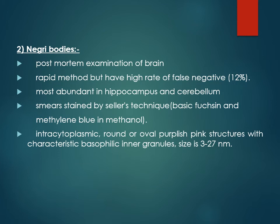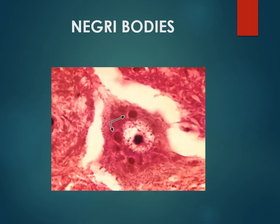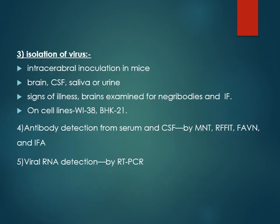Negri bodies are intracytoplasmic eosinophilic inclusion bodies detected in brain tissue, so they can only be examined post-mortem. They are most abundant in the hippocampus and cerebellum and are stained using Seller's technique. They appear as pink structures with basophilic inner granules. This is a rapid method but has a high rate of false negativity — absence of Negri bodies does not rule out rabies.